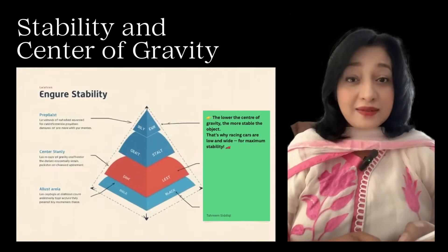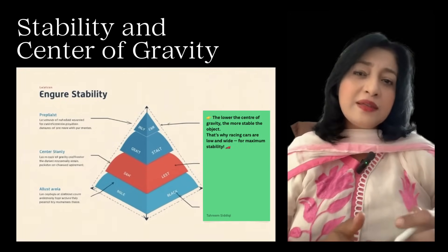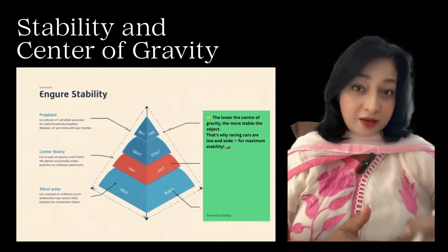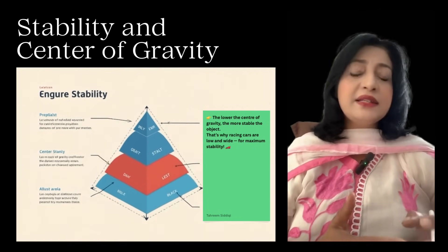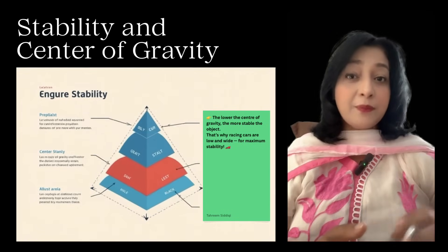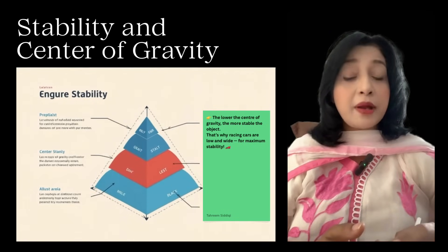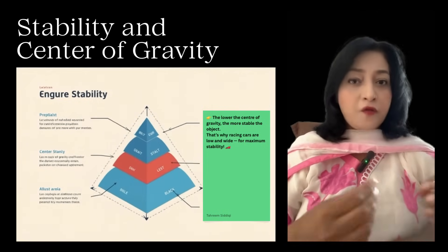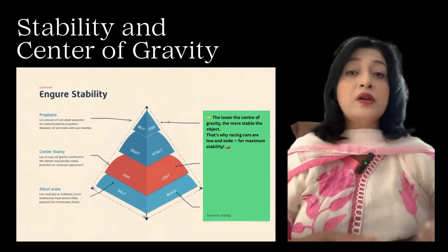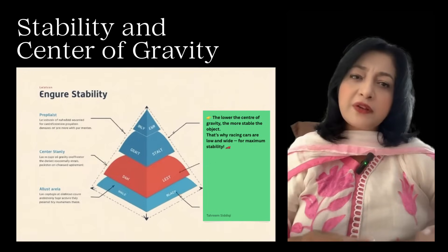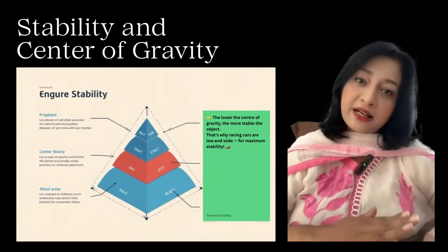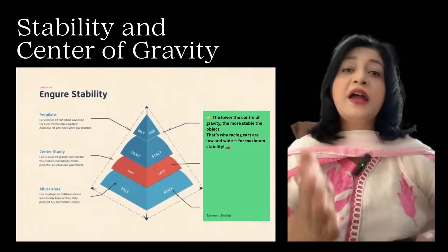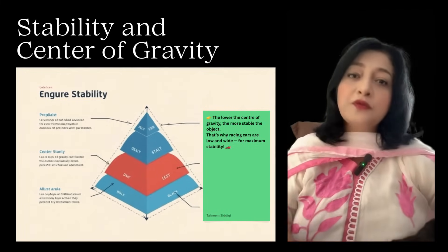Now the topic is stability. Stability means how easily an object returns to its original position after being disturbed. There are three types. Number one: stable equilibrium — when the object returns to its original position. For example, a cone resting on its base; the center of gravity rises when tilted, then falls back. Number two: unstable equilibrium — when displaced, it moves further away.